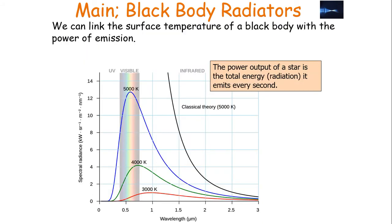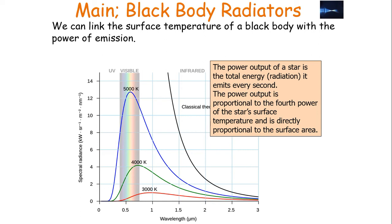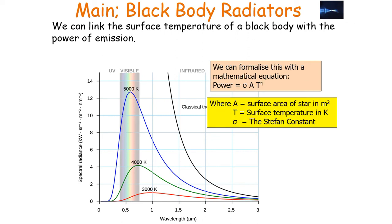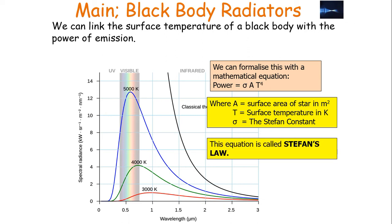We can also link the surface temperature of a black body with the power of emission. The power output of a star is the total energy radiated every second. The power output is proportional to the fourth power of the star's surface temperature and is directly proportional to the surface area of the star. We can formalise this: power P equals the Stefan constant σ, times the surface area A in metres squared, times the surface temperature T in Kelvin to the power 4. The Stefan constant is 5.67 × 10⁻⁸ W m⁻² K⁻⁴. This is called Stefan's law.